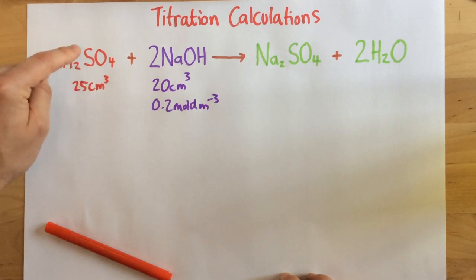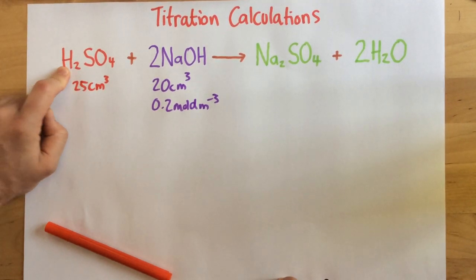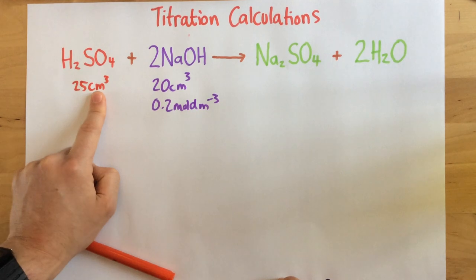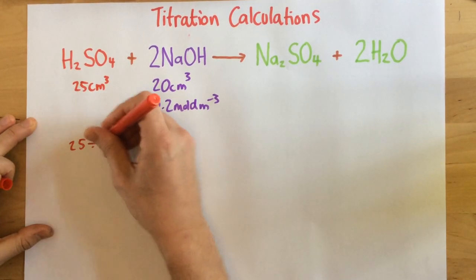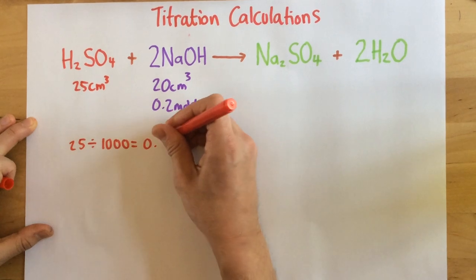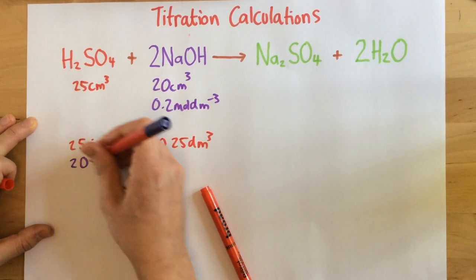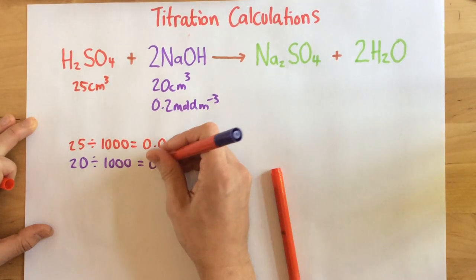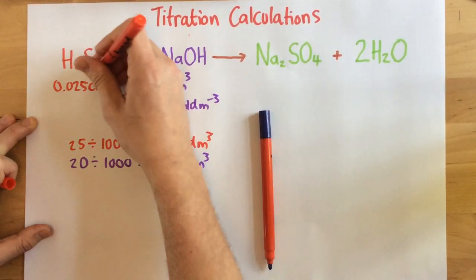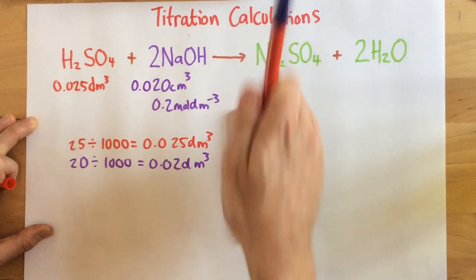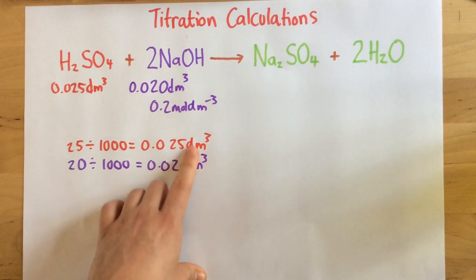I'm trying to find the concentration of the acid but I can't do it straight away, and we'll see why in a second. Whenever we're dealing with titrations we need to convert cm³ into dm³ by dividing by 1000. So 25 ÷ 1000 = 0.025 dm³, and 20 ÷ 1000 = 0.02 dm³. I've converted both values because these units need to be in dm³.